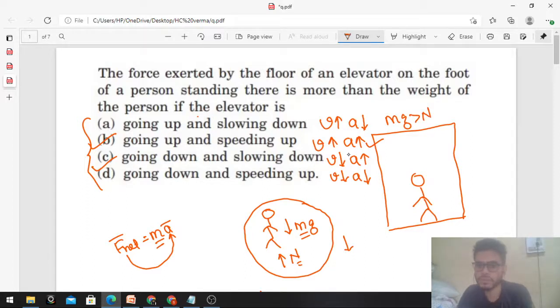Going up means velocity is in the upward direction. This means normal will be greater than mg and acceleration is up. Going down and speeding up means mg will be greater than normal overall. So coming to the next case...